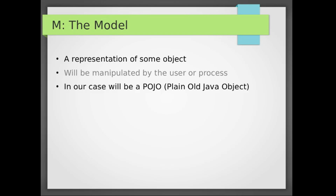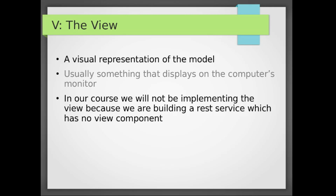In our case, the model is just a POJO — a plain old Java object — which is just any Java object with fields, getters and setters, and some basic constructors. The view portion of the MVC pattern is a representation of the model; basically this is what will be visualized on the front end. For example, if you're on a page changing your password, that visual view of three text fields where you put your old password, your new password, and confirm your new password — that would be the view. The model would be what's on the back end that stores that information once you submit the form.